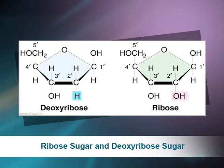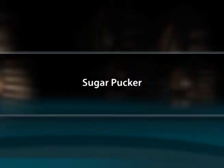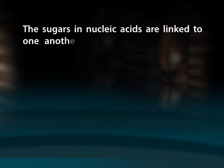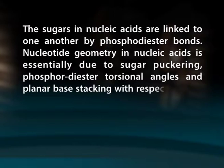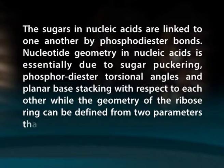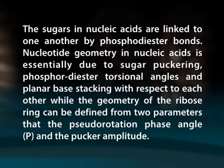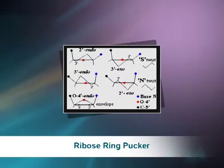This figure shows ribose sugar and deoxyribose sugar. The sugars in nucleic acids are linked to one another by phosphodiester bonds. Nucleotide geometry in nucleic acids is essentially due to sugar puckering, phosphodiester torsional angles, and planar base stacking with respect to each other. The geometry of the ribose ring can be defined from two parameters: the pseudorotation phase angle P and the pucker amplitude. Ring pucker affects the torsional relationships of adjacent C-H bonds in the sugar ring. Despite the fact that the pentagon angle of 108° is very close to the carbon tetrahedral angle of 109.5°.